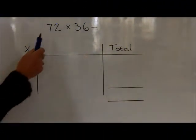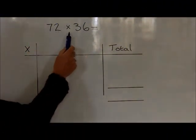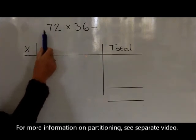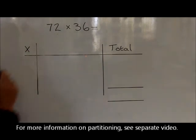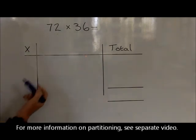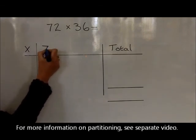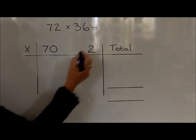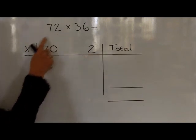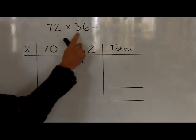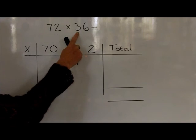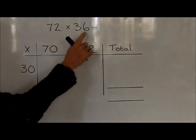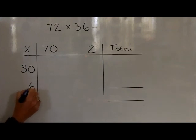When we multiply tens and units by tens and units, we have to partition this into seven tens and two units. So the seven tens are 70 and the two units are 2. We're then going to multiply this all by 36, which we partition into three tens, which are 30, and six units, which are 6.